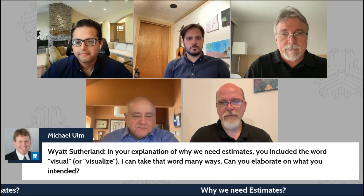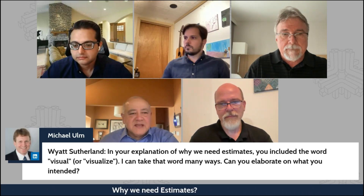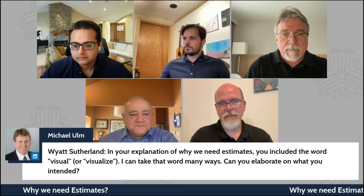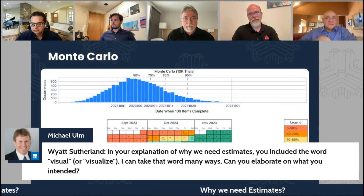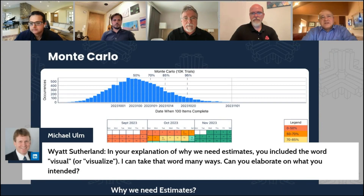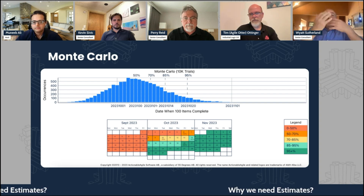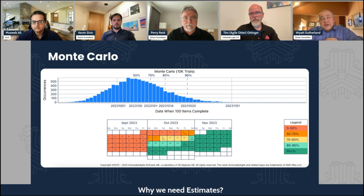Maybe let's pull up one of the slides — jump ahead to slide eight. So here's an example. What we use is throughput, like how many items we finish within a time period.